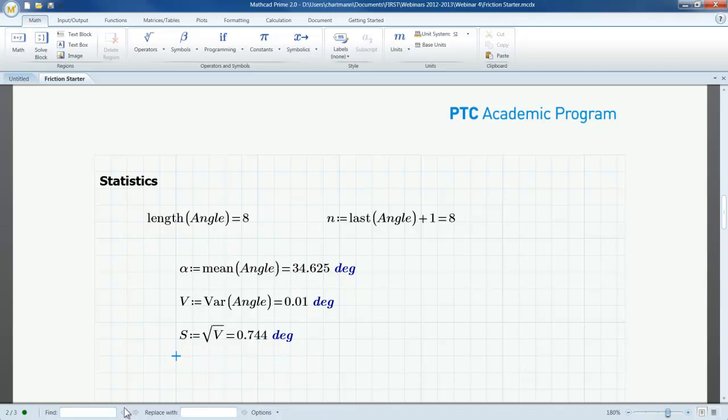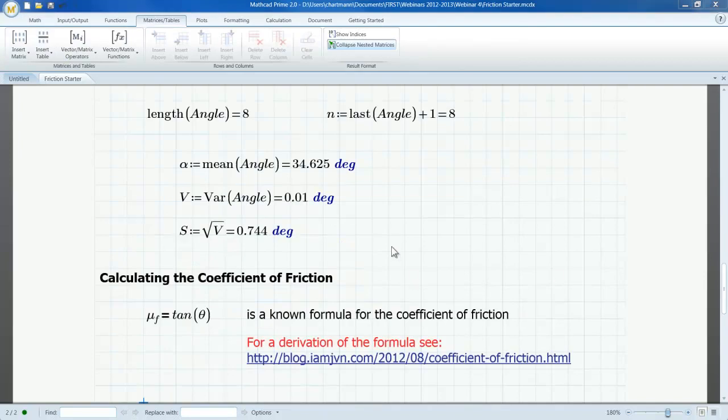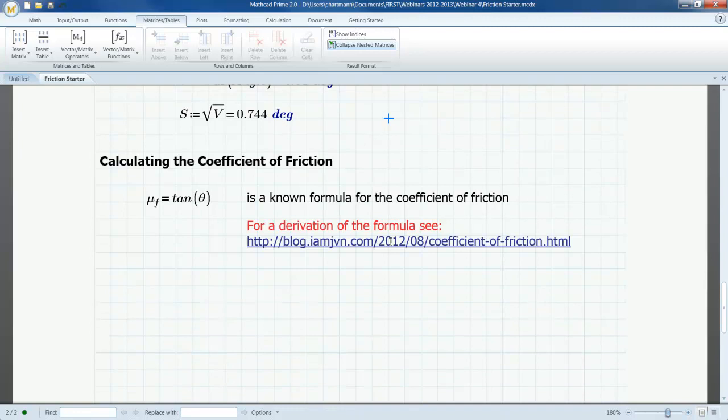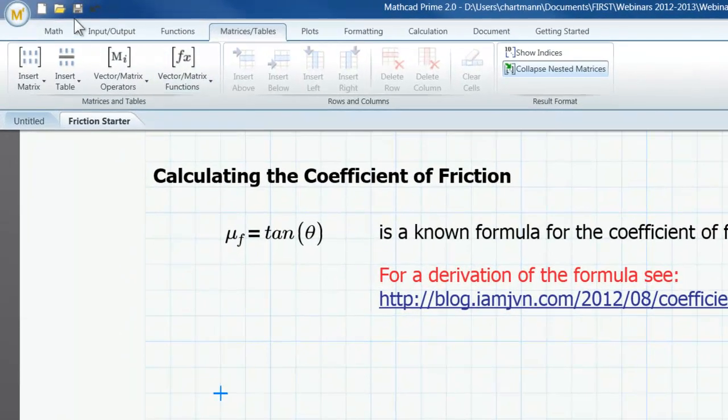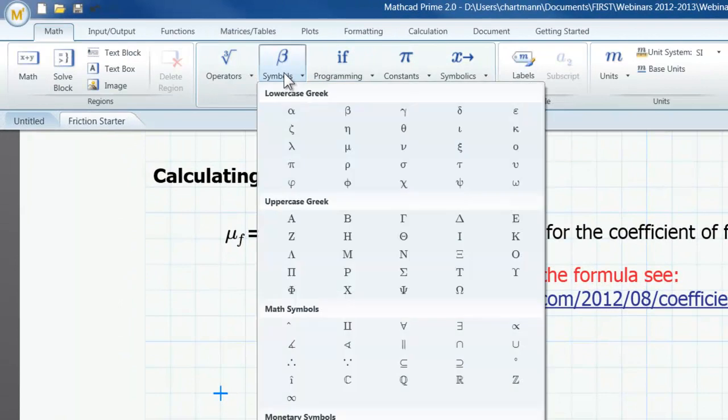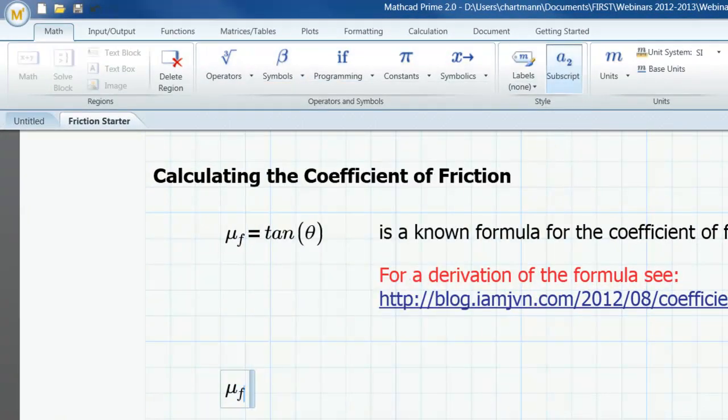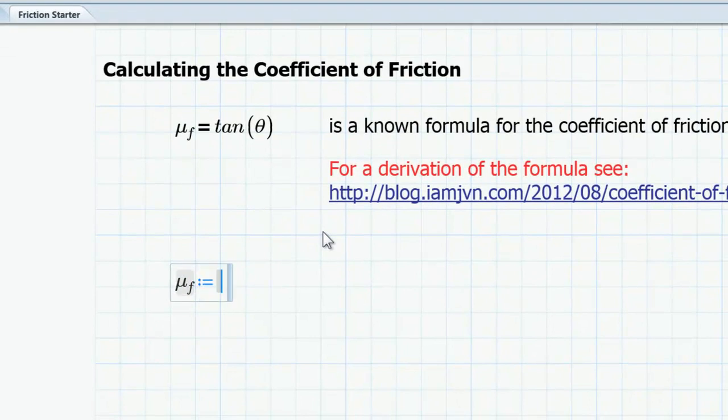And I can move on to calculating my coefficient of friction. I will now calculate the coefficient of friction using the statistics that I've just introduced into my worksheet. Scrolling down to the section of my worksheet that I created for calculating the coefficient of friction. I'm going to define my coefficient of friction as mu sub f. And so I'll go to the math ribbon. And I'm going to insert the symbol mu. And I'm going to add a subscript f to note this as a coefficient of friction. And I'm going to type a colon to insert a definition operator. And then type tangent. And then go up and insert my variable name alpha. And then I'll evaluate that. So now here's my coefficient of friction.